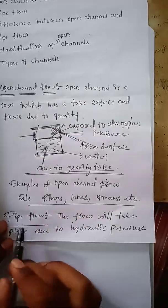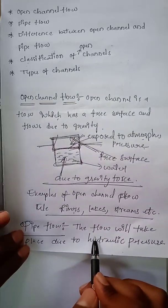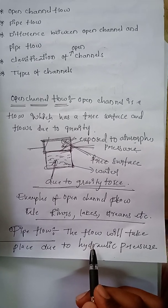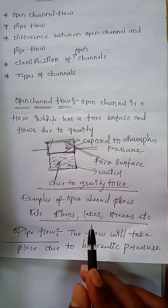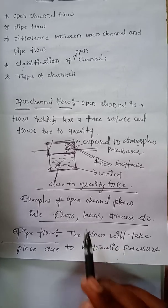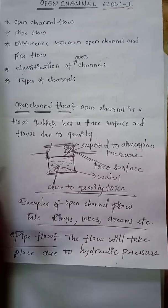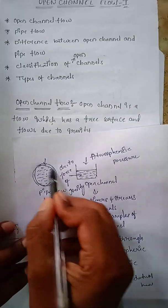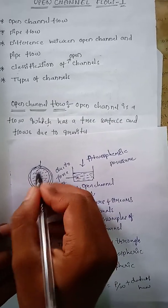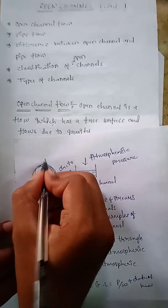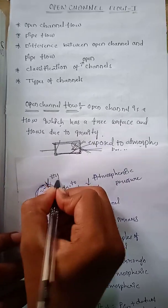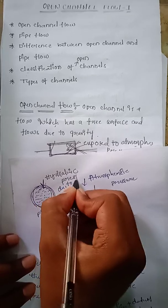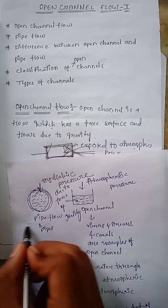Coming to pipe flow — pipe flow is the flow that takes place because of hydraulic pressure, and the water runs fully throughout the pipe. Let us consider a pipe in which water is running fully throughout under hydraulic pressure. This is called pipe flow.